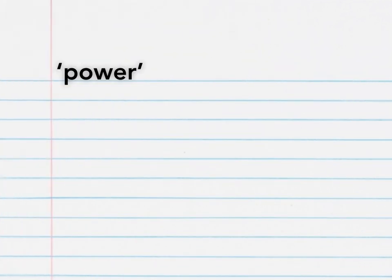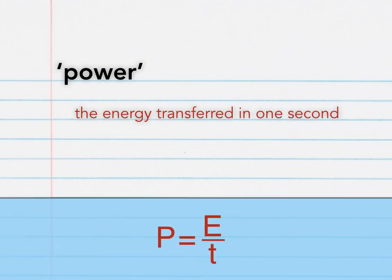Next up is power. Let's see if you can work out a definition for power using an equation. The equation links power, energy, and time. And remember that the unit for time is seconds. This is the definition. Power is the energy transferred in one second. And this is the equation which helps you to work it out. Power p is equal to energy e divided by time t.